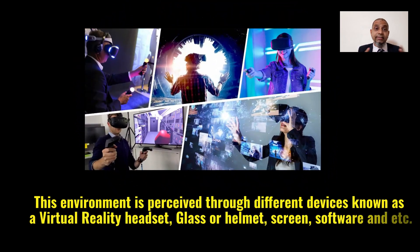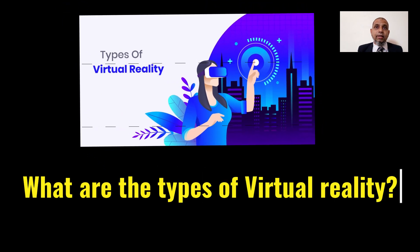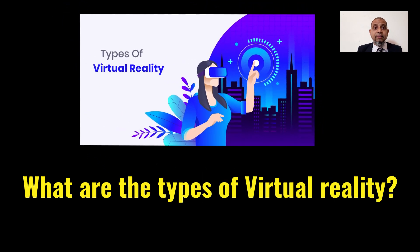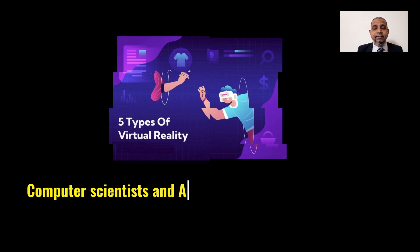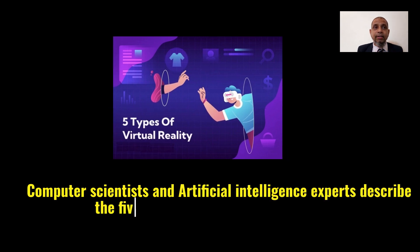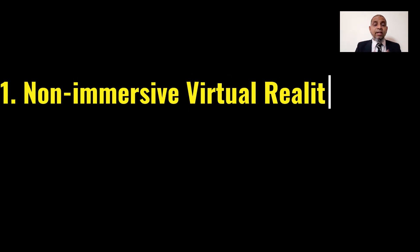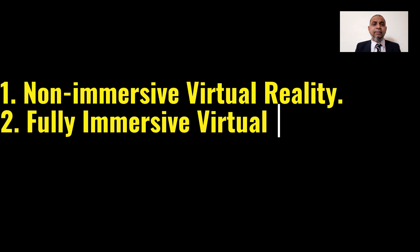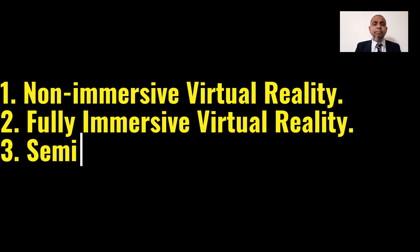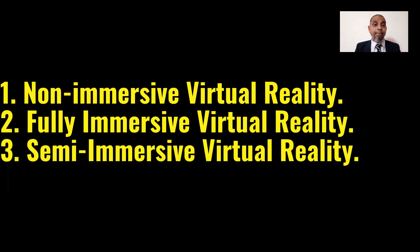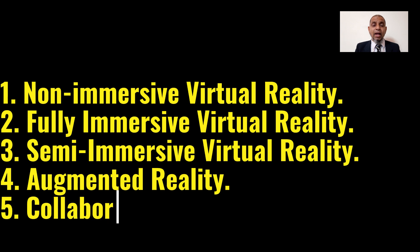Question number two: what are the types of virtual reality? Computer scientists and artificial intelligence experts describe five important types of virtual reality: number one, non-immersive virtual reality; number two, fully immersive virtual reality; number three, semi-immersive virtual reality; number four, augmented reality; and number five, collaborative virtual reality. I will explain each type here.